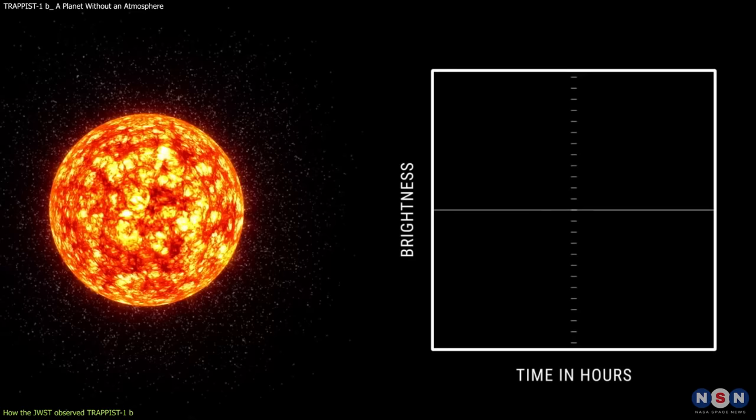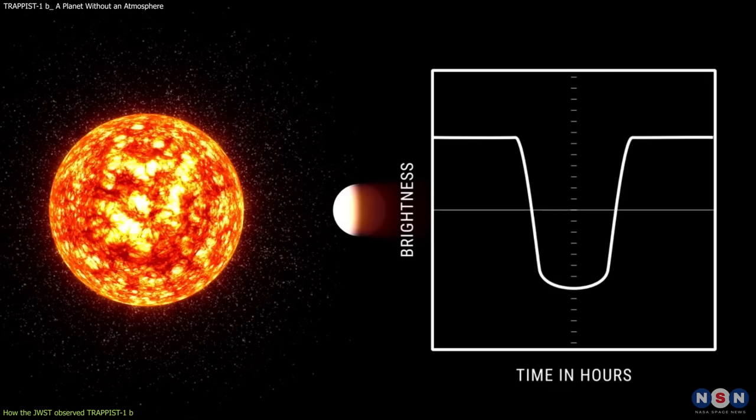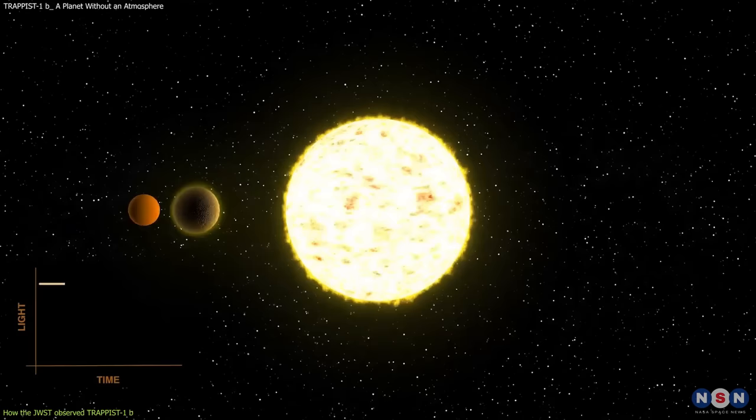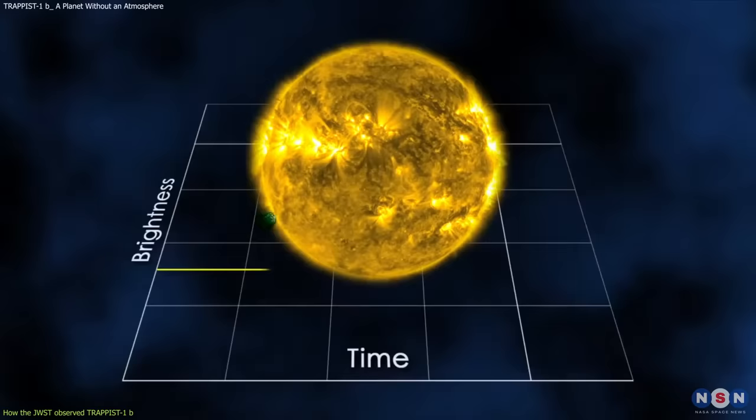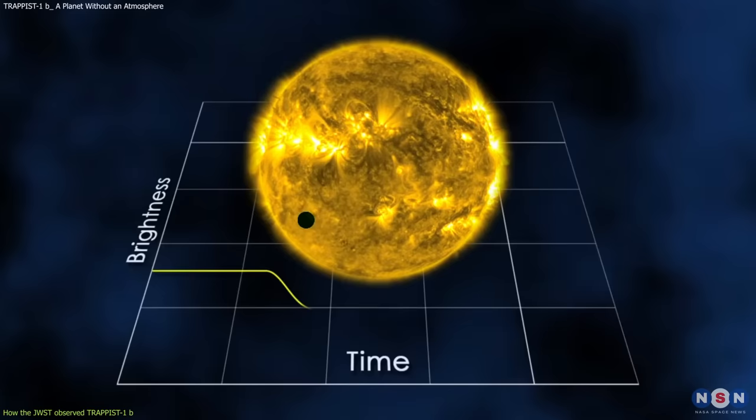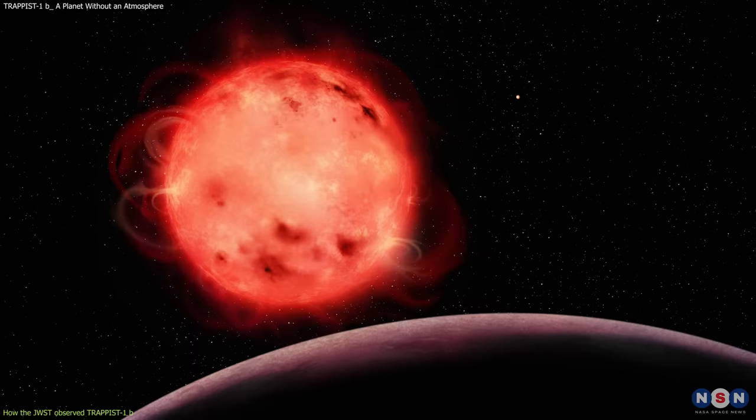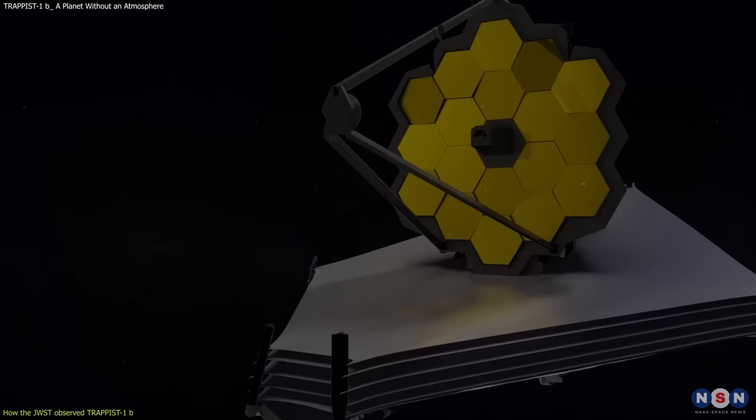Transit spectroscopy is a method that measures the changes in the star's light as a planet passes in front of it, or transits. During a transit, some of the star's light is blocked by the planet, while some of it passes through the planet's atmosphere, if it has one. By comparing the spectrum of the star's light before, during, and after a transit, astronomers can infer what elements and molecules are present in the planet's atmosphere and how thick or thin it is.